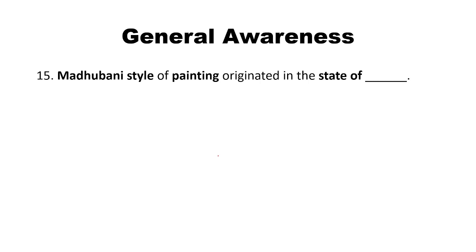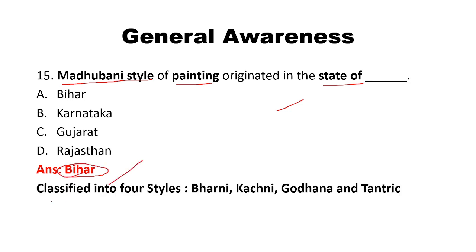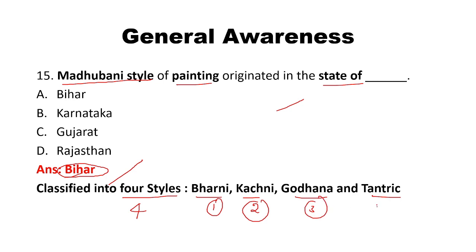Madhubani style of painting originated in the state of? Options: Bihar, Karnataka, Gujarat, Rajasthan. The answer is Bihar. Madhubani style of painting is classified into four styles: Bharni, Kachni, Godana, and Tantri.